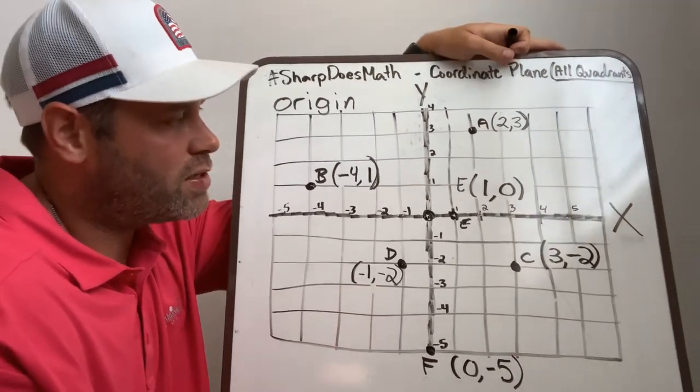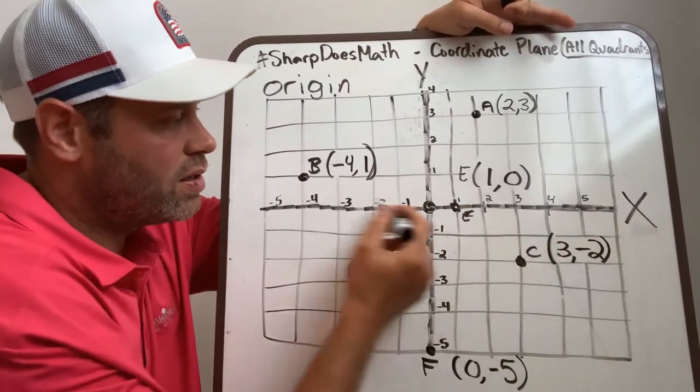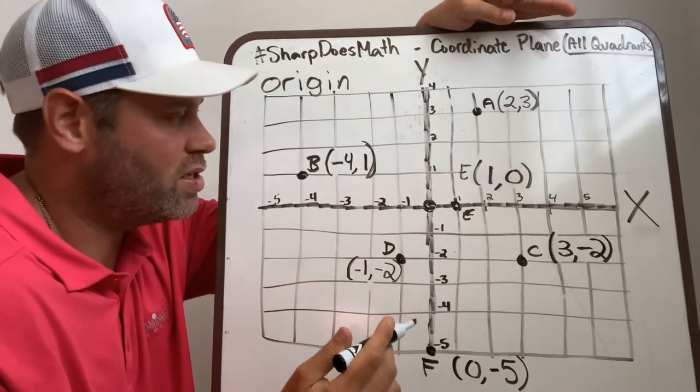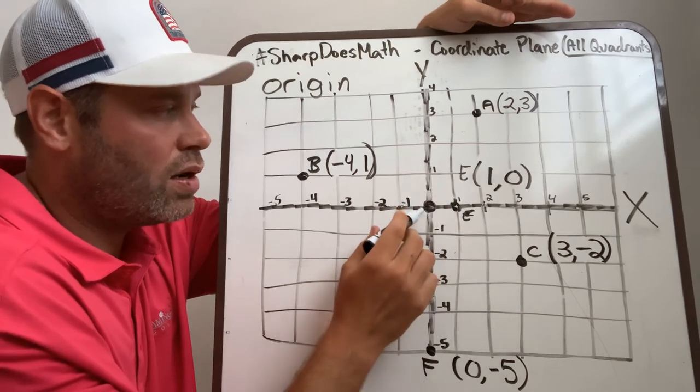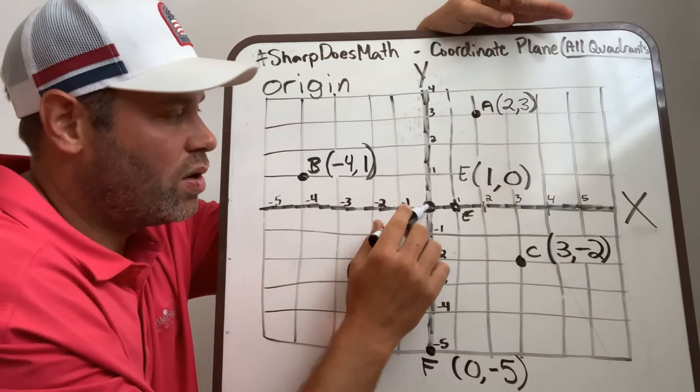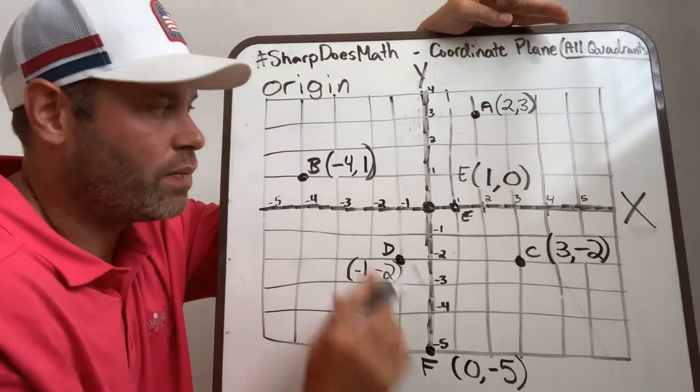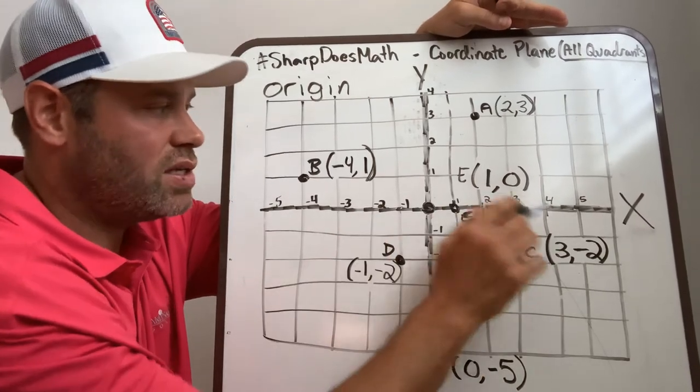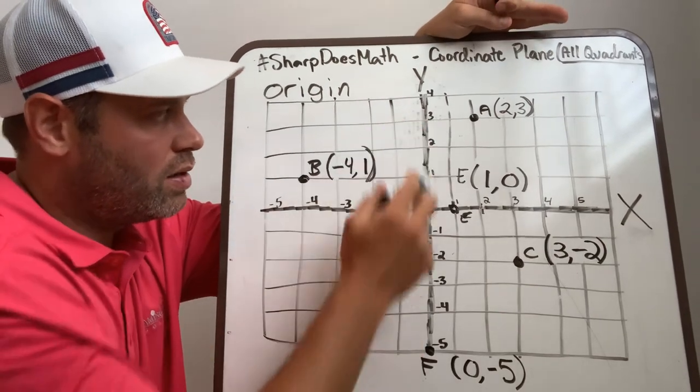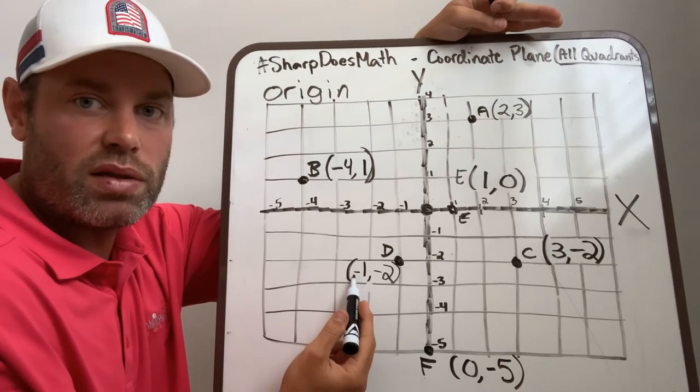Important things: always find the origin. The origin is where the x and the y cross, where they intersect. Find that origin, start there, always start there, and either go right or left first, and then go up or down. Remember positives, negatives. Make sure you're paying attention to those numbers on the line.